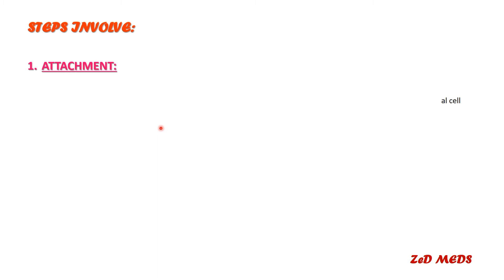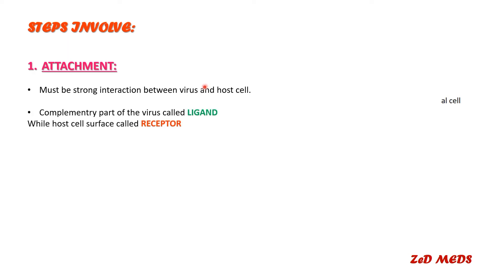The very first step of viral replication is attachment — the virus must first attach to the surface of the cell. There must be a strong interaction between the virus and the host cell. The complementary part of the virus is called the ligand, while the host cell surface component is called the receptor; these must bind to each other for strong attachment.